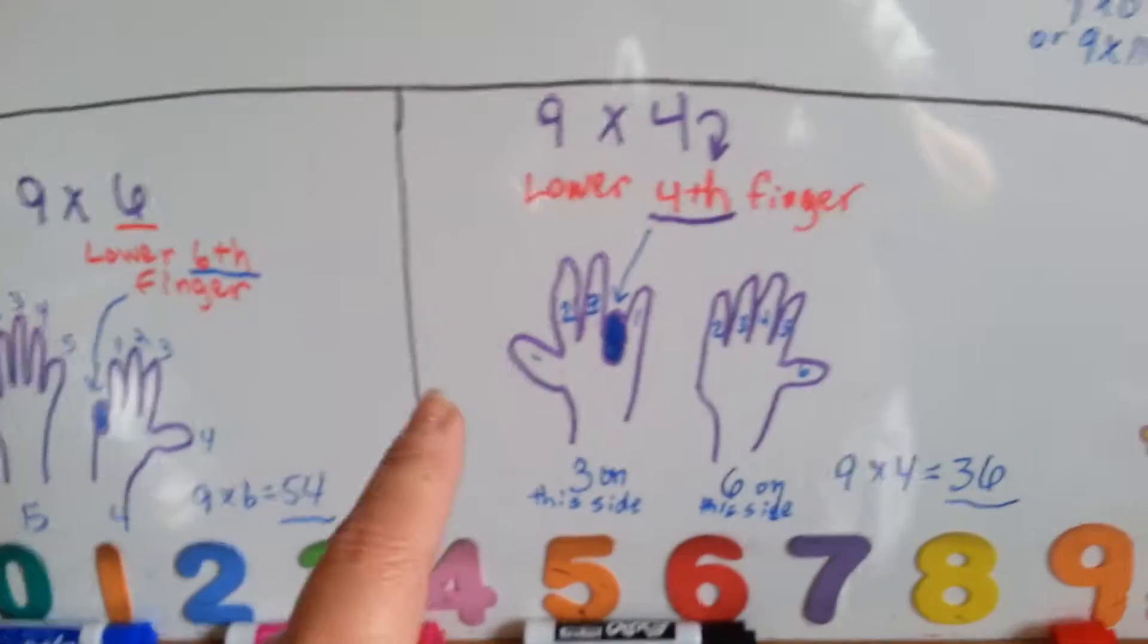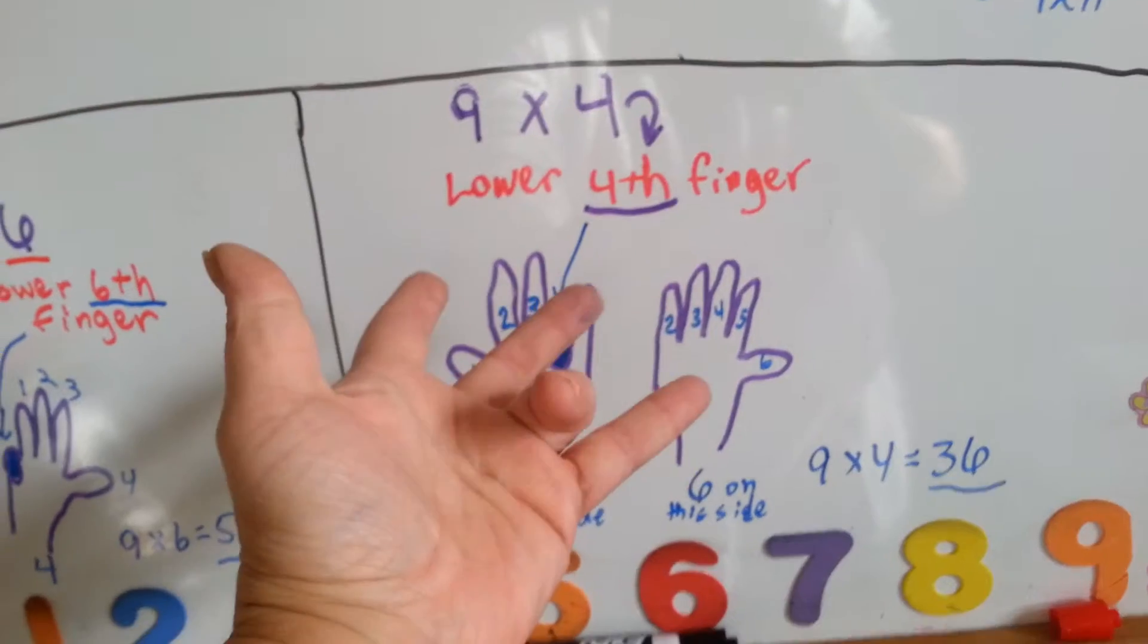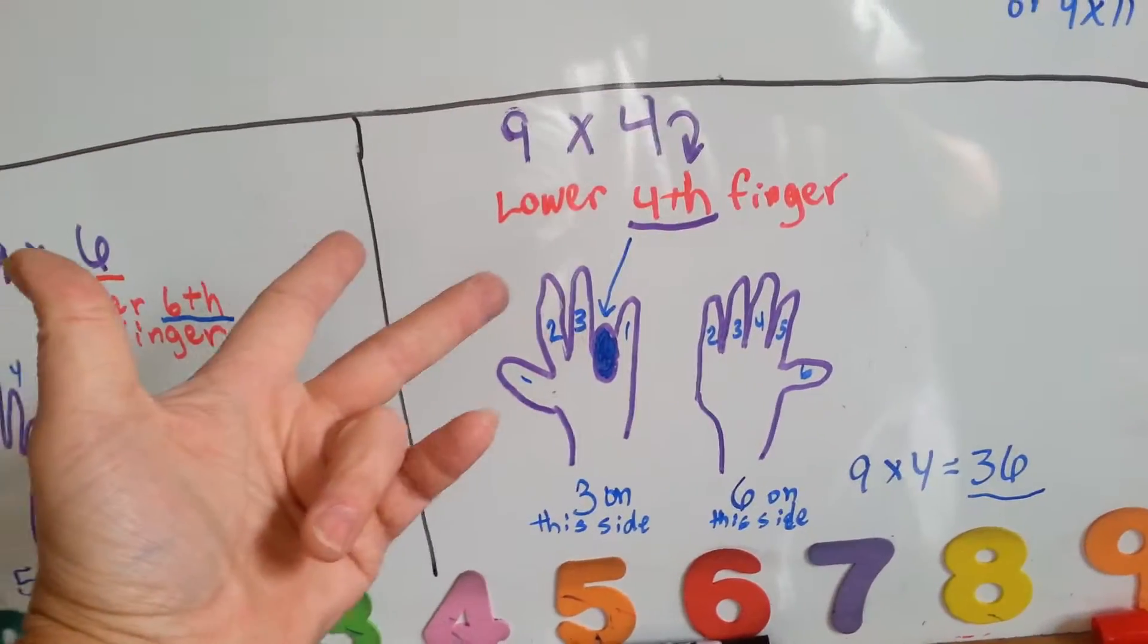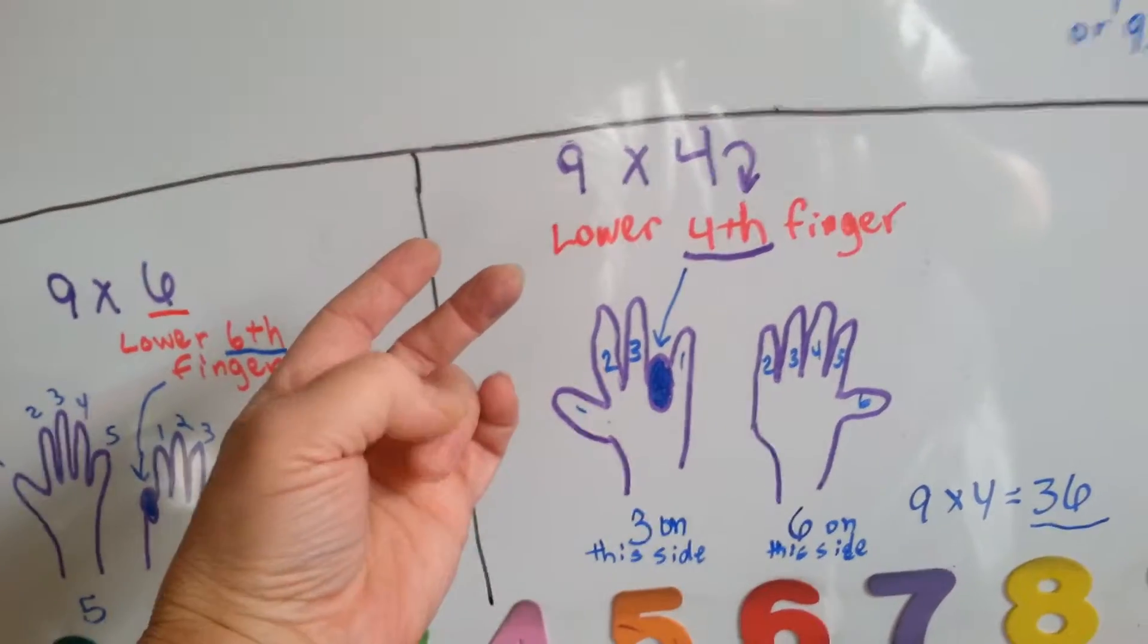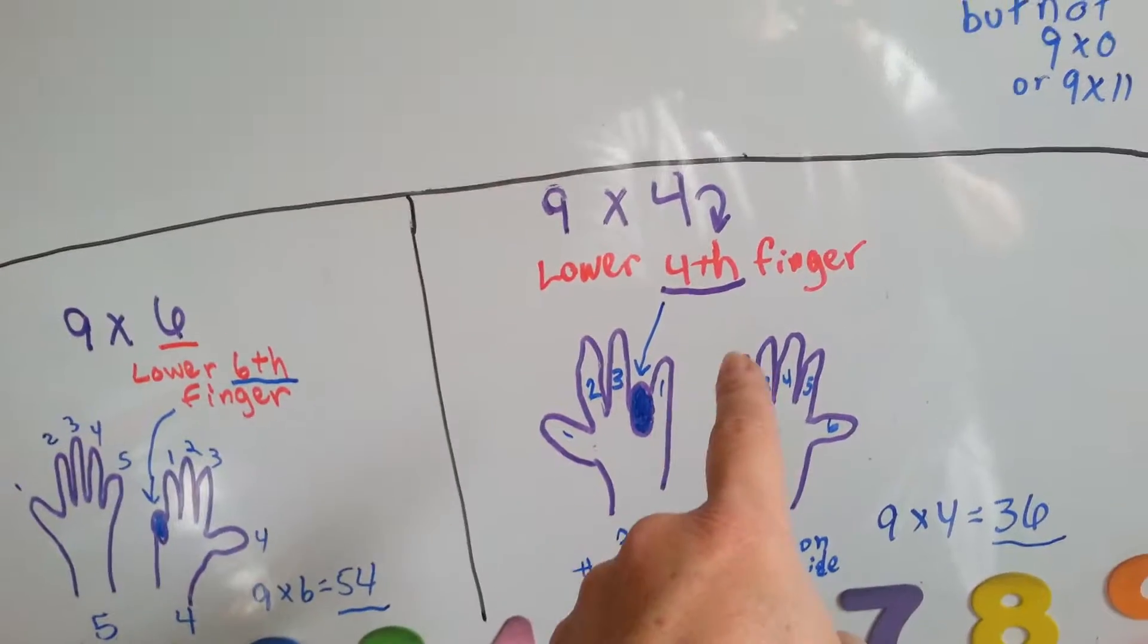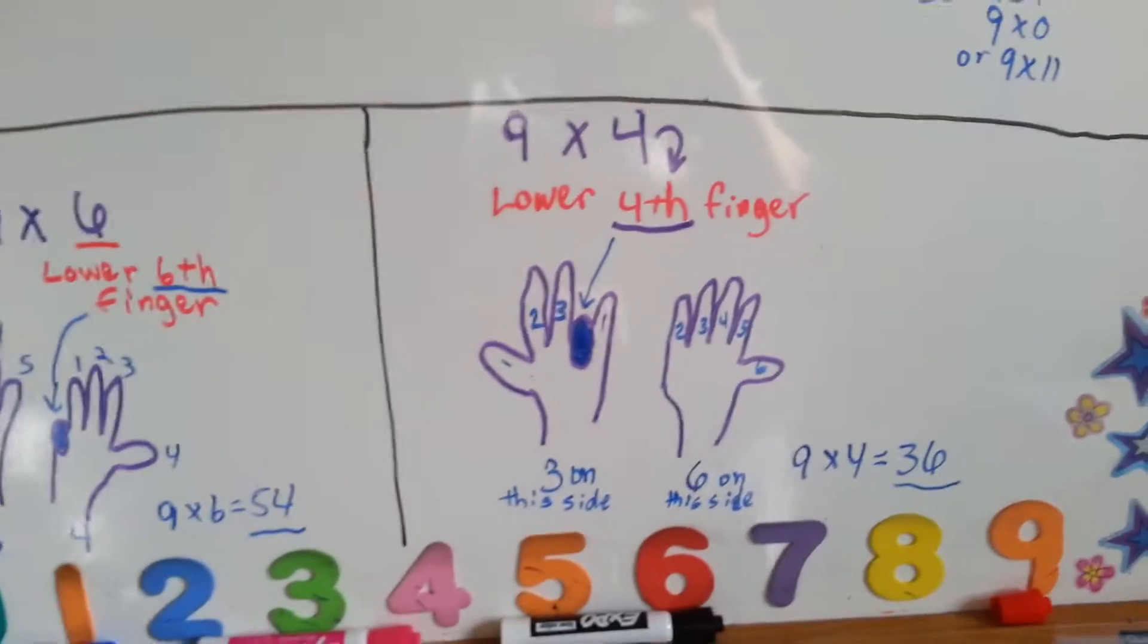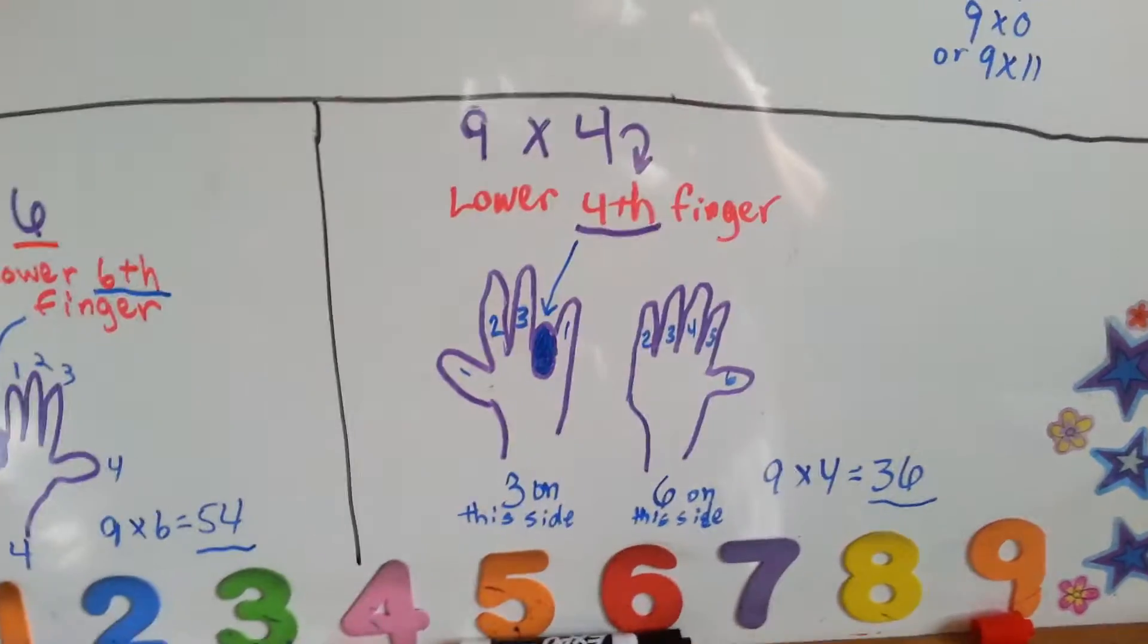Let's try a different one. 9 times 4. You go 1, 2, 3, 4. That's the one you fold down, is this one right here. That means there's 3 tens and 1, 2, 3, 4, 5, 6 ones. 9 times 4 is 36. Isn't that a cool trick?